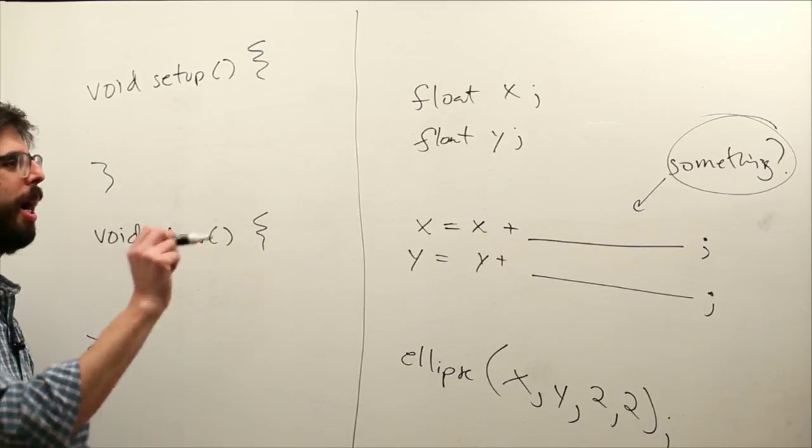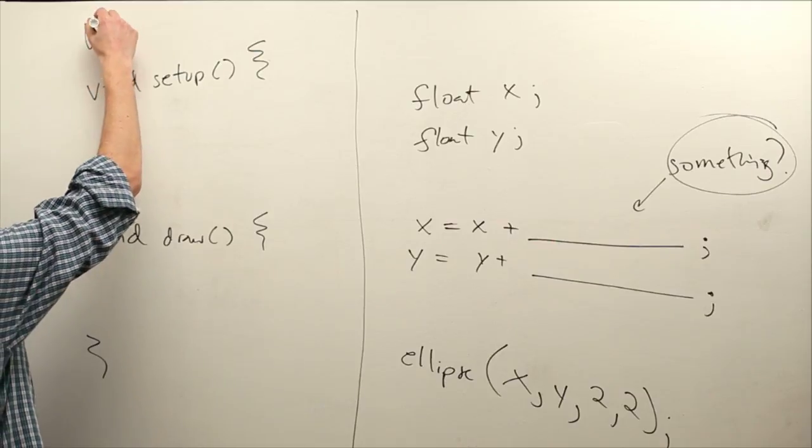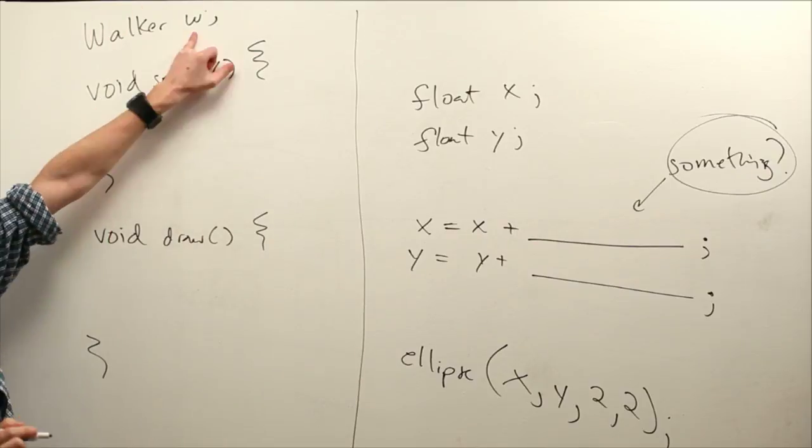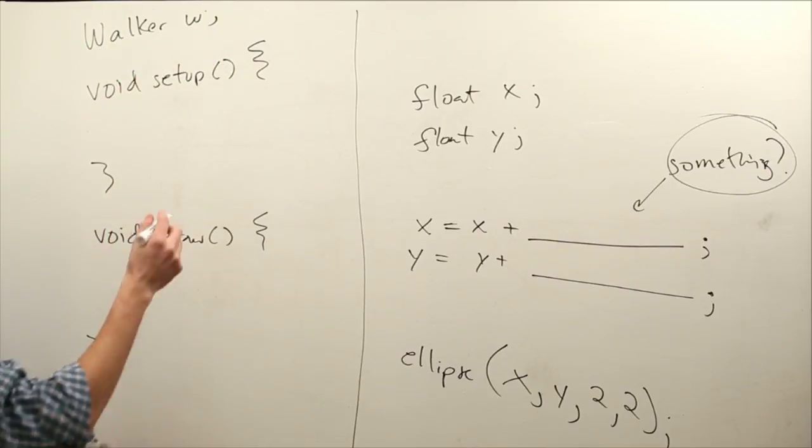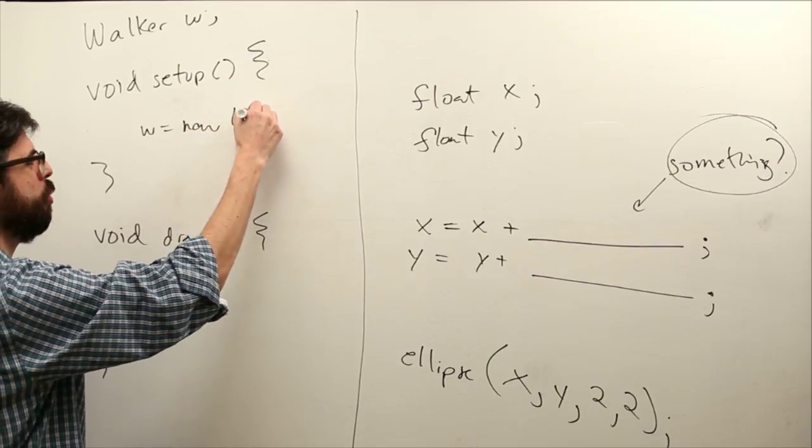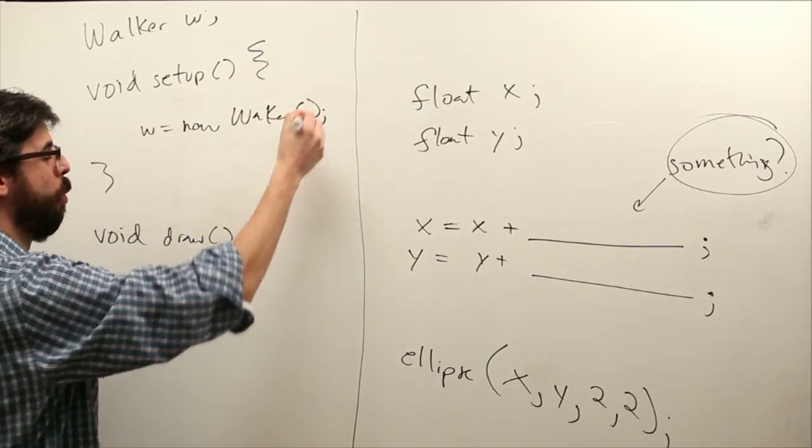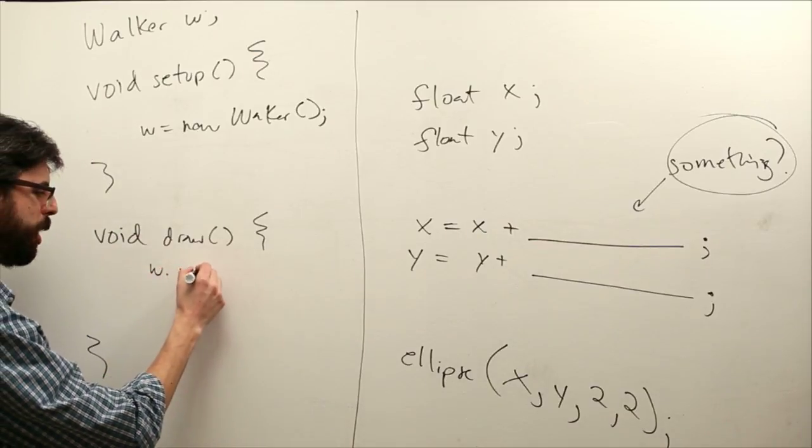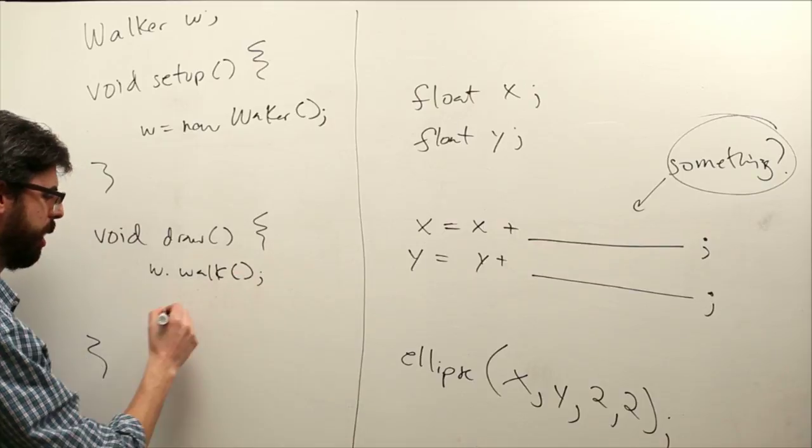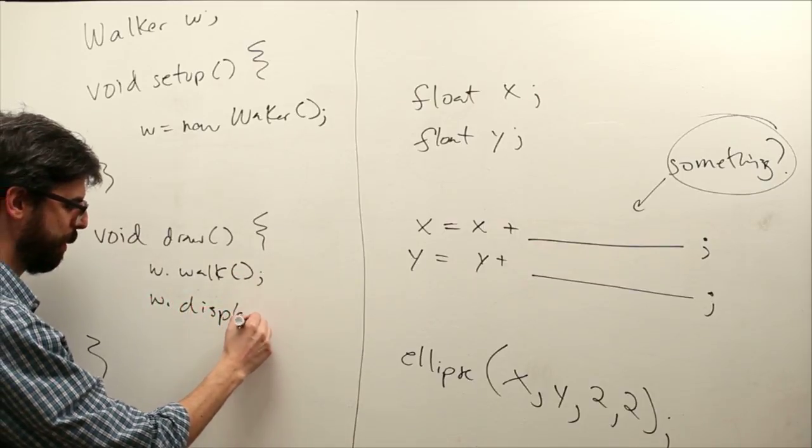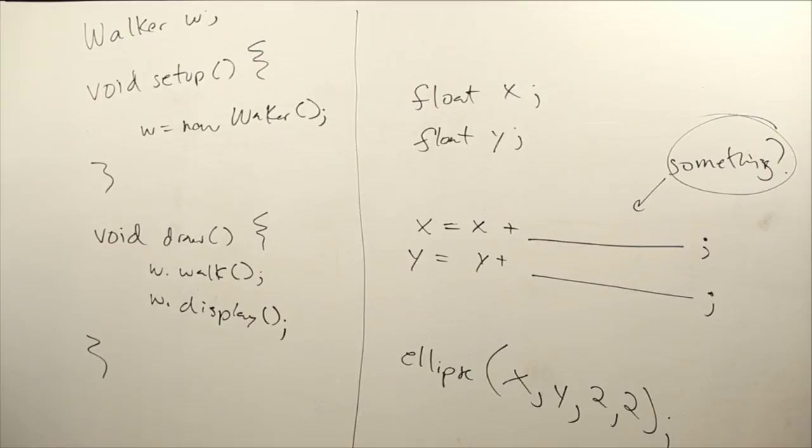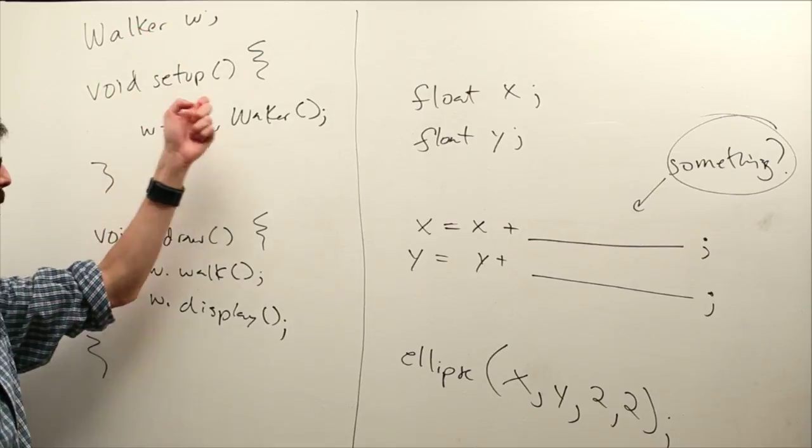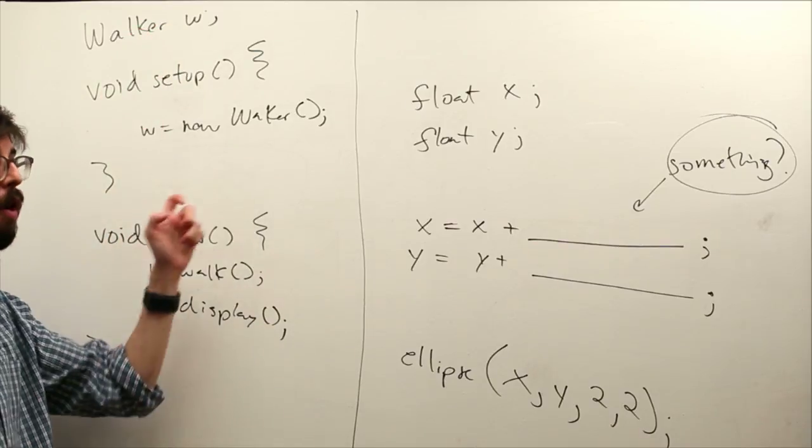We want to create this object. Let's call it a walker. We're going to declare that as a variable. The name of the variable is w. The type is walker. Walker is going to be a new walker object. And then that's what we do at the beginning. We set up our object. And then in draw, maybe we call like a function called walk. And maybe we call a function called display. What does that mean? This is the structure that we're going to have. We're going to be declaring objects, initializing objects, and using those objects over and over again in draw.